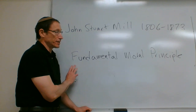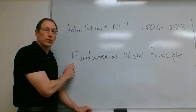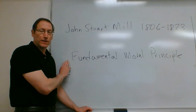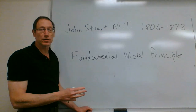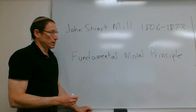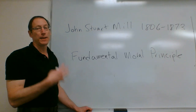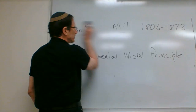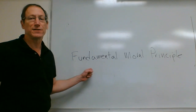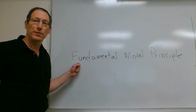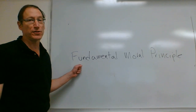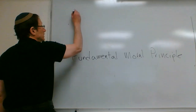Mill would say that there is a fundamental moral principle — a single rule which underlies all of the other rules that we might believe in. What is the fundamental moral principle? According to Mill, it's the principle of utility. The principle of utility says: given a set of options — choices about what you might or might not do in any given circumstance — that action which promotes the greatest amount of social happiness is the morally right action.